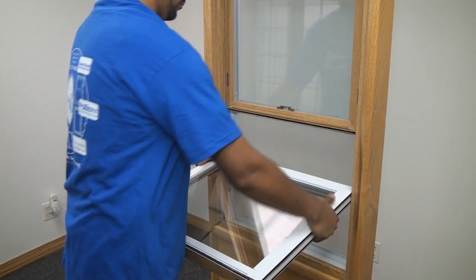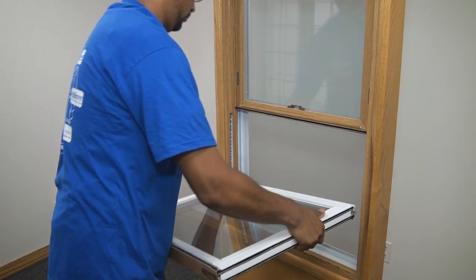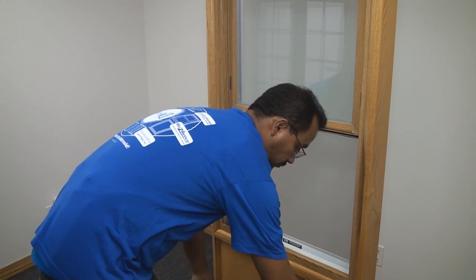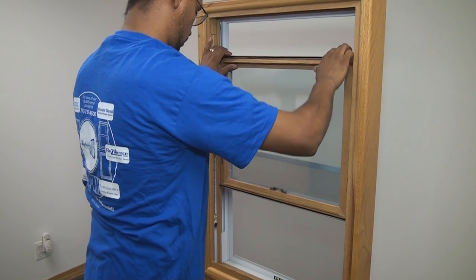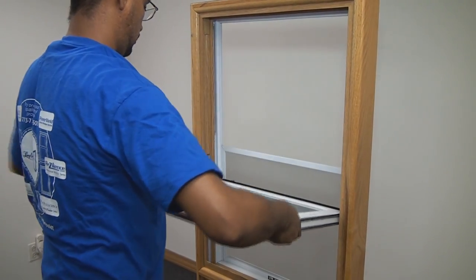To remove the sash, push down on one side and pull up on the other side, and the sash will pop out of place. Put the sash to the side. If you need to get to the top sash, pull the sash down and repeat the above steps.